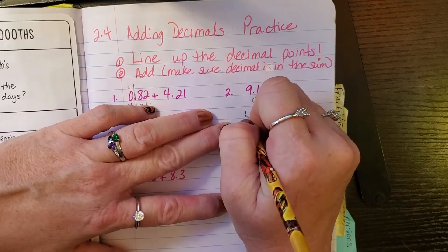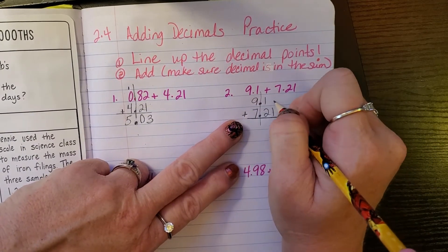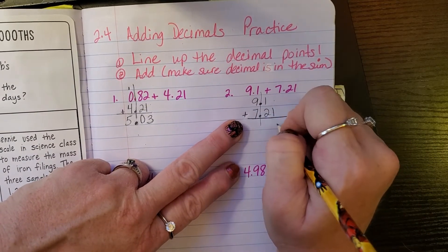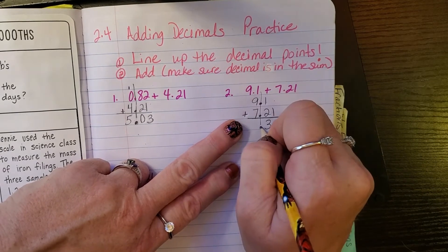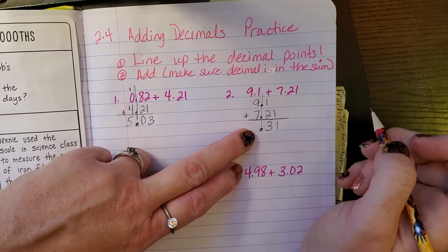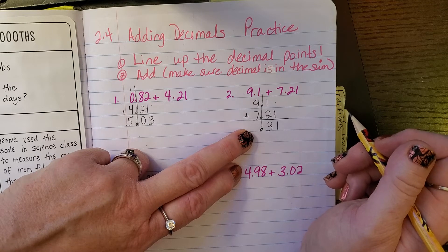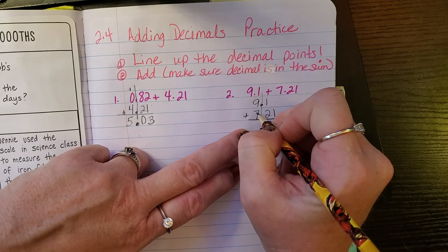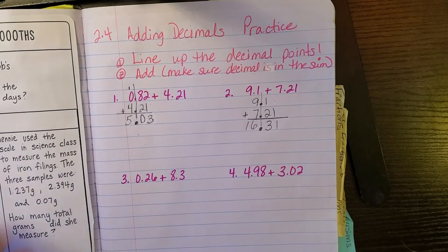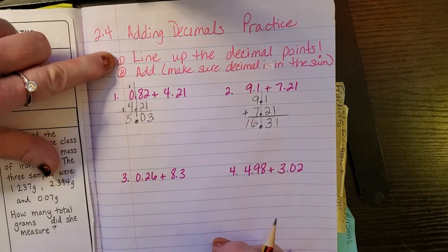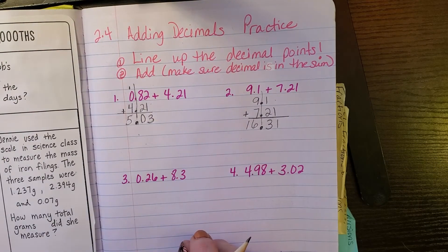Put the operation sign out here so we know we're adding. 1 plus nothing is 1. 2 plus 1 is 3. Put a decimal point — big enough so teachers know it's a decimal, but not crazy big. Then 7 plus 9 is 16, so your answer is 16.31. Line up the decimal points, add, make sure your decimal is in your sum — that's it.